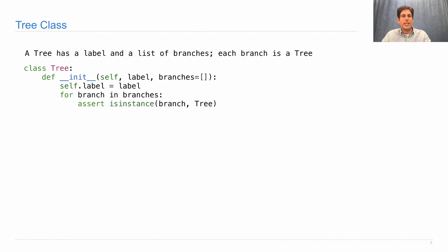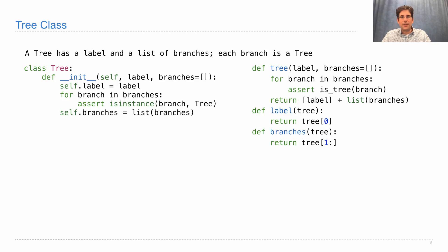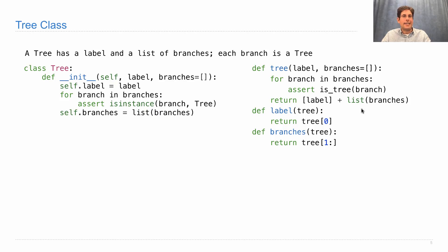We set the label, check that each branch is an instance of the tree class, and then set the branches to a list of the branches, which makes a copy. Recall our data abstraction, which used the same terminology — lowercase tree instead of uppercase tree — and involved a bit more work. Not only did we have to define the constructor but also selectors. More importantly, we had to invent a representation: a tree would be represented as a list containing the label and whatever was in all the branches, and the selectors had to match the constructor. Those details are no longer necessary when we use the object system — we just declare what the attributes are for each instance of the tree class, and we know how to access them using dot notation.